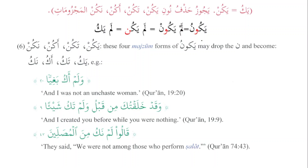As we know, the mudari is the present tense. When we use lam before it, the mudari becomes majzoom. When we have a weak letter, more than one change takes place — mostly two or three changes. Number one: the ending becomes sukoon because of lam. Number two: when we have it across a canine, the weak letter will be dropped.